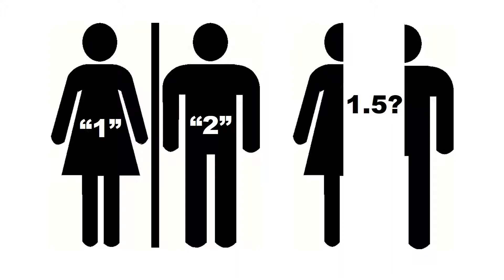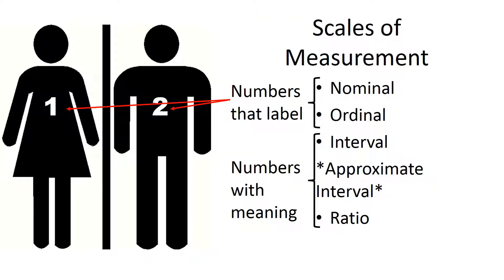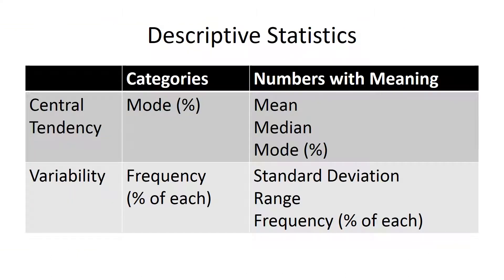That example illustrates two important concepts: scales of measurement and statistical analysis. Given that, we need to have a sense of what numbers in the data file mean. In statistics, we call that the scale of measurement. Broadly speaking, the initial question is whether the numbers label categories or whether they have meaning as a number. Understanding the meaning of the numbers in the data file is important for both descriptive and inferential statistics. In both cases, we use different analyses depending on the type of data we have.